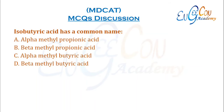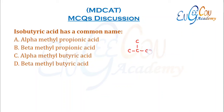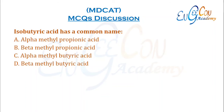Isobutyric acid has the common name alpha-methylpropanoic acid. A is the correct option.